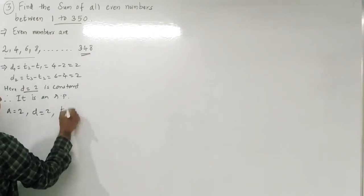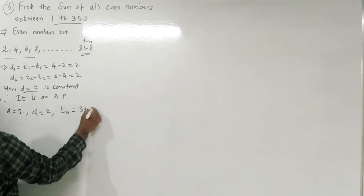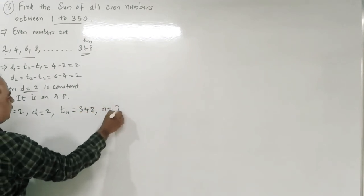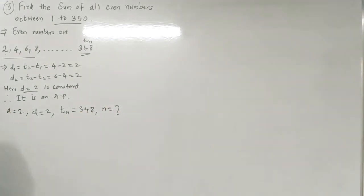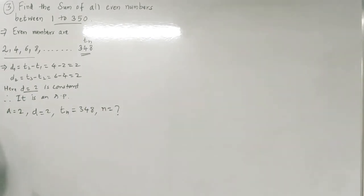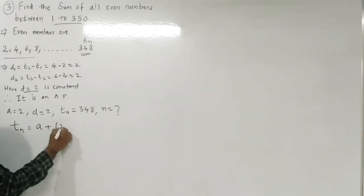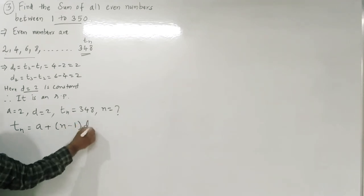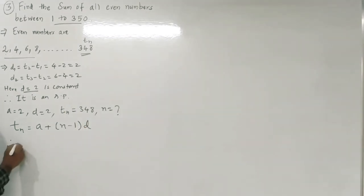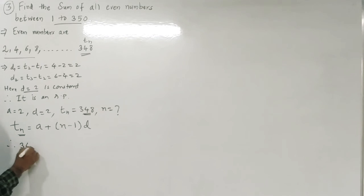In this sequence, first term a = 2, common difference d = 2, and last term Tn = 348. Since n is not given, we first find n using the formula Tn = a + (n−1)d. So 348 = 2 + (n−1)×2.